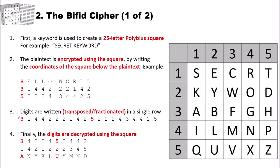And then finally, in the last step of the encryption process, the digits are decrypted using the square. So we take our digits here, like this, 3,1 as our first coordinates. We have a look in our square, 3,1, and we have the letter A. Then we have 4,4, which is the letter M. And we continue doing so until we have decrypted all of our digits.